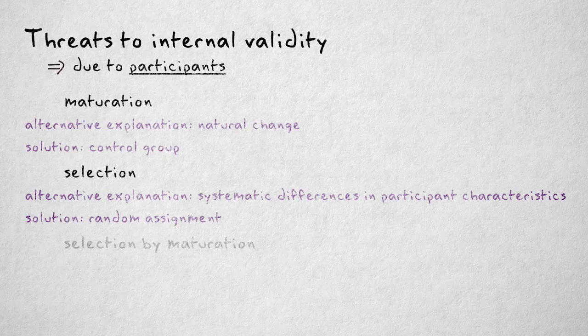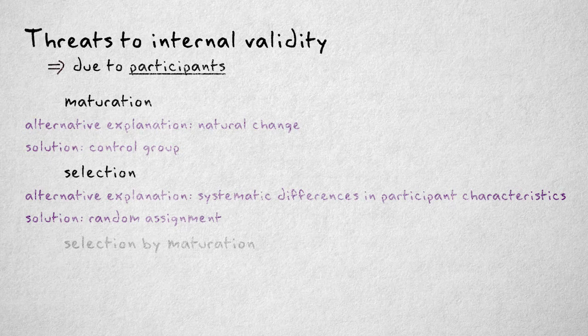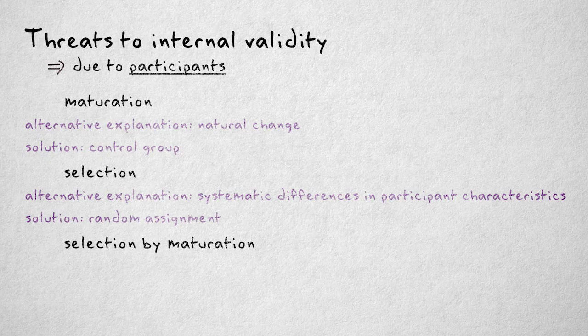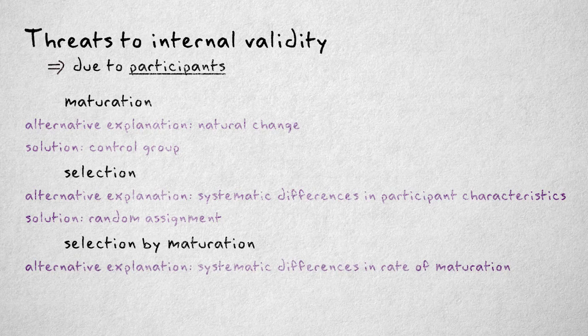The last threat to internal validity related to participants is the combined threat of maturation and selection. We call this a selection by maturation threat. This happens when groups systematically differ in their rate of maturation.